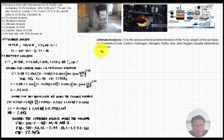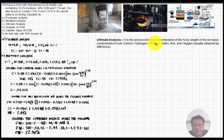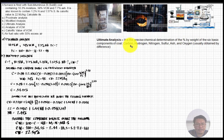Now let's go to letter C: ultimate analysis. It is defined as the precise chemical determination by percent by weight of the six basic components — carbon, hydrogen, nitrogen, sulfur, ash, and oxygen — usually determined by means of difference.